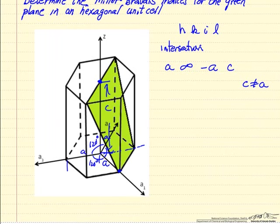And then we write these indices first. To determine the indices, we write these in terms of the multiples of the unit cell dimensions, so 1, infinity, minus 1, and 1.